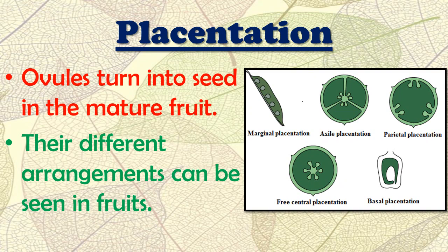For example, marginal placentation is seen in peas, where seeds are arranged at the margin of the fruit. Axile placentation is in the axis of the fruit. Parietal placentation is on the side of the fruit. Free central placentation has seeds in the central position with no axis or margin. Basal placentation has the ovules or seeds at the base of the fruit.